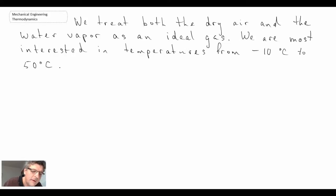So typically what we do is we will treat both the dry air and the water vapor as an ideal gas. So we make that approximation and the temperatures that we typically deal with when we are dealing with HVAC tend to be in the range of about minus 10 up to about 50 degrees C.